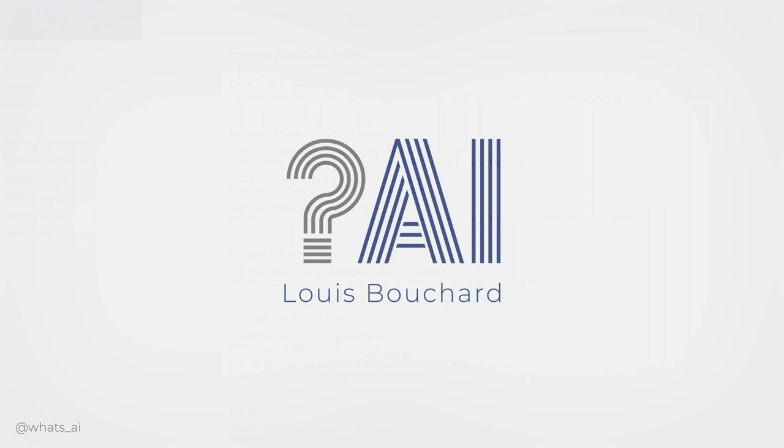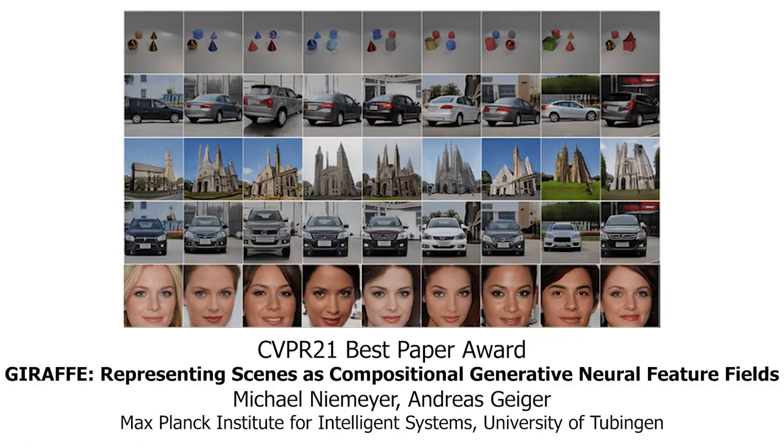CVPR 2021 Best Paper Award goes to Michael Niemeyer and Andreas Geiger from the Max Planck Institute for Intelligent Systems and the University of Tübingen for their paper called GIRAFFE, which looks at the task of controllable image synthesis.